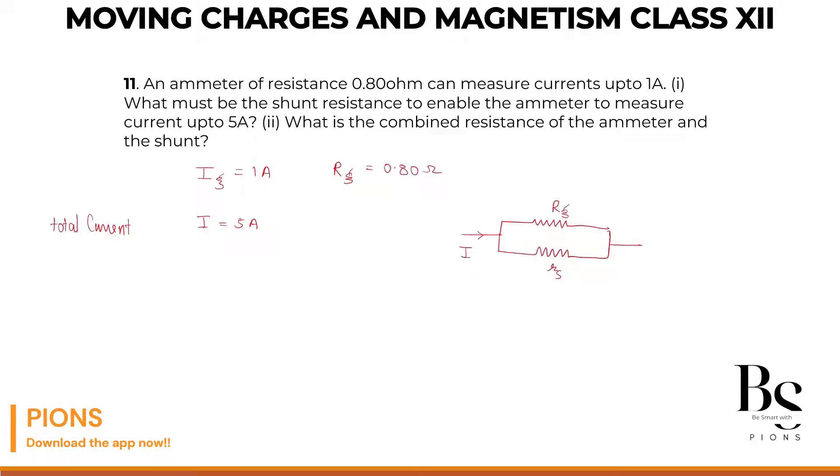So what is the current across the shunt? I minus IG, very simple. And if they are connected in parallel, the voltage across the galvanometer must be equal to the voltage across the shunt. What is the voltage across the galvanometer? Current across the galvanometer into resistance.